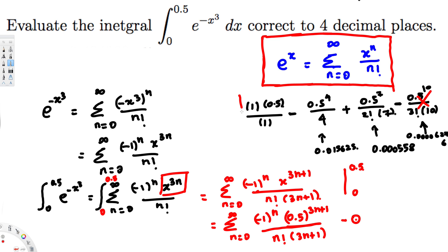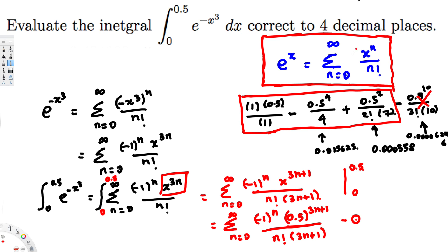We add the three terms before the neglected one together. Adding 0.5, minus the n=1 term, plus the n=2 term gives us 0.484933. This is the final answer for the integral correct to four decimal places.